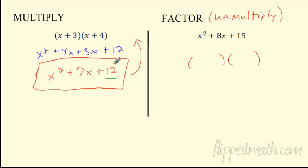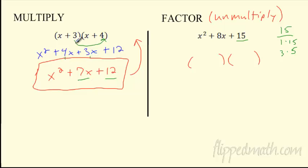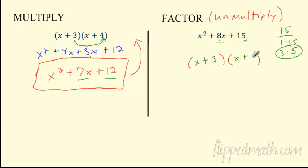Where did the 12 come from? It came from the two last numbers in the double distribute. So I'm looking for something that multiplies to 15. What multiplies to 15? Well, 1×15 and 3×5 — those are the only things. Then the 7 came from 4 and 3. I need two numbers that multiply to 15 and add to 8. That's 3 and 5. So I just un-multiplied: it's x+3 times x+5.